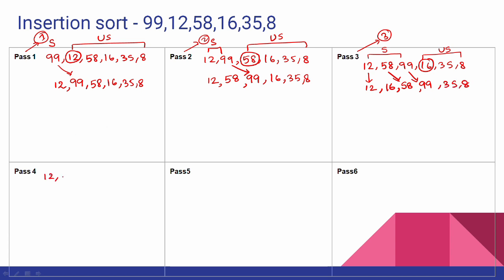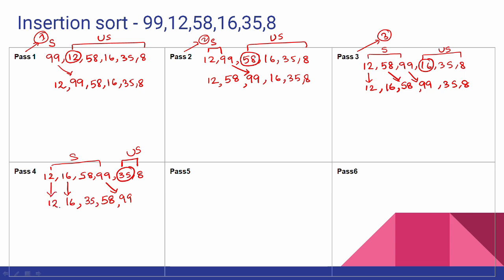Next pass: 12, 16, 58, 99, 35, and 8. We have 4 elements sorted, 2 unsorted. Next we take 35. Compare with 99 - move. Compare with 58 - move. Compare with 16 - 16 is less than 35, so place 35 after 16. Next pass: 12, 16, 35, 58, 99, and 8.